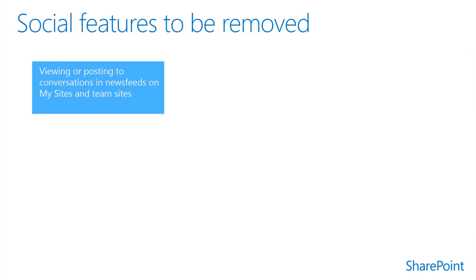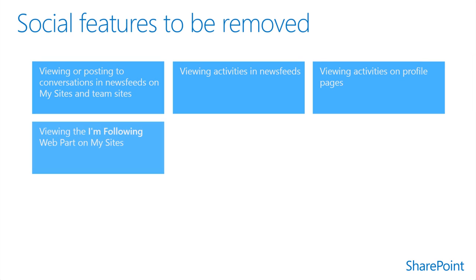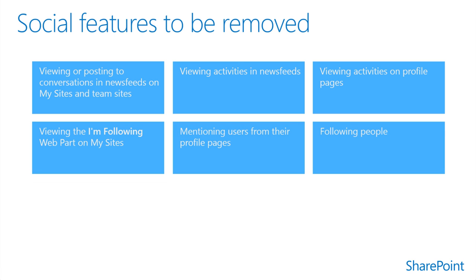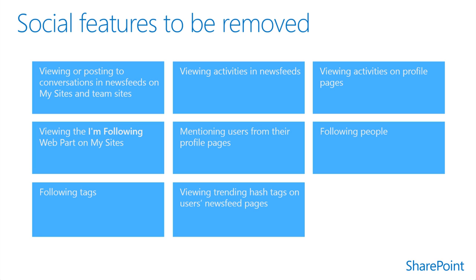In order to provide a more seamless experience in a hybrid social deployment including SharePoint and Yammer, some SharePoint social capabilities should be removed, such as viewing or posting to conversations and news feeds on My Sites and Team Sites, viewing activities in the news feed, viewing activities on profile pages, viewing the 'I'm following' web part on My Sites, mentioning users from their profile page, following people, following tags, and viewing trending tags on the user's news feed page. None of the procedures necessary to remove these SharePoint 2013 enterprise social features will remove them permanently — the features are kept to allow future upgrades to SharePoint 2013 to finish successfully.